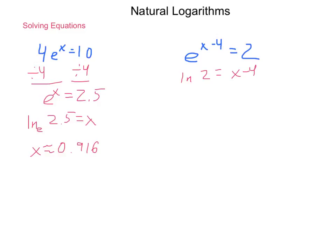So, solving for X now, we add 4 to both sides. 4 plus the natural log of 2 equals X. So, X is approximately equal to the value 4.693.